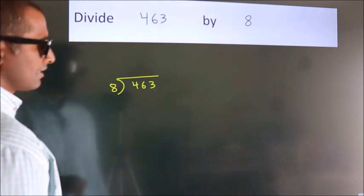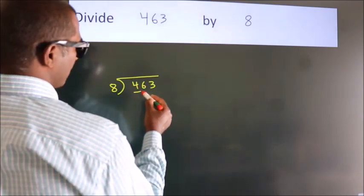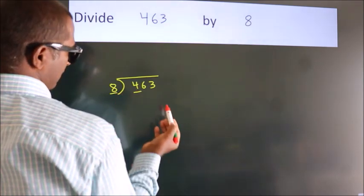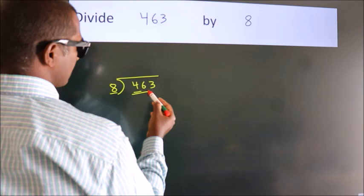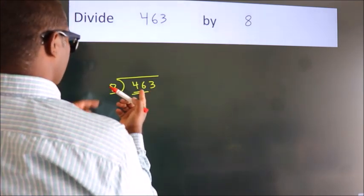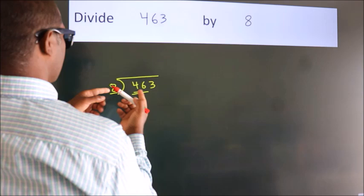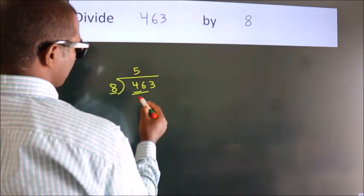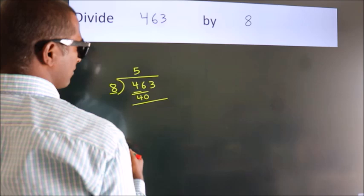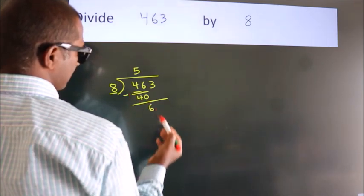Next, here we have 4, here 8. 4 is smaller than 8, so we should take 2 numbers: 46. A number close to 46 in 8 table is 8 fives 40. Now we should subtract. We get 6.